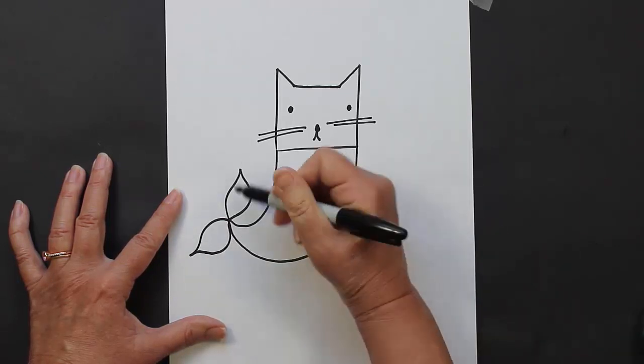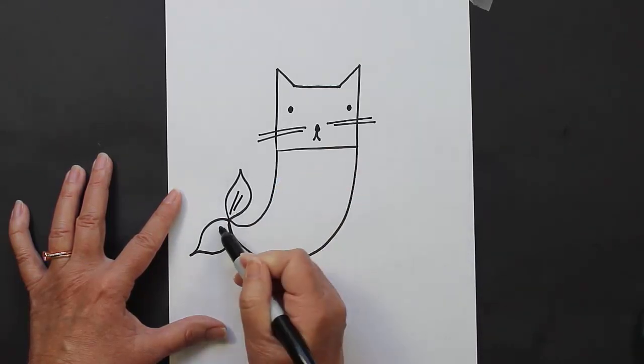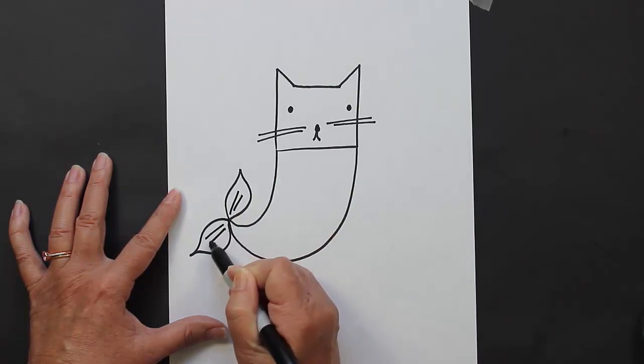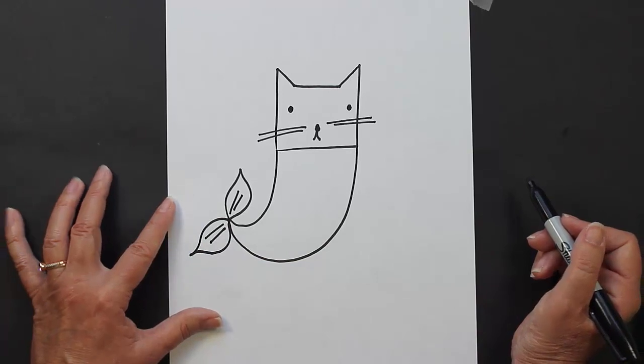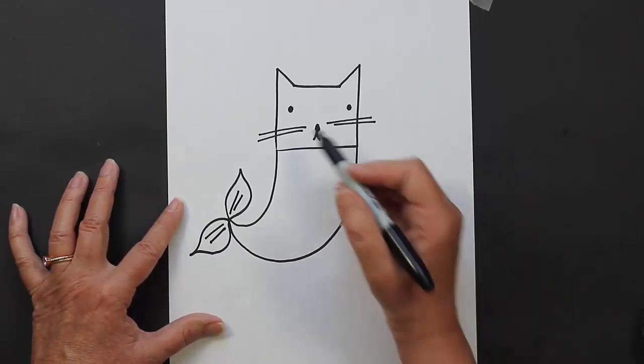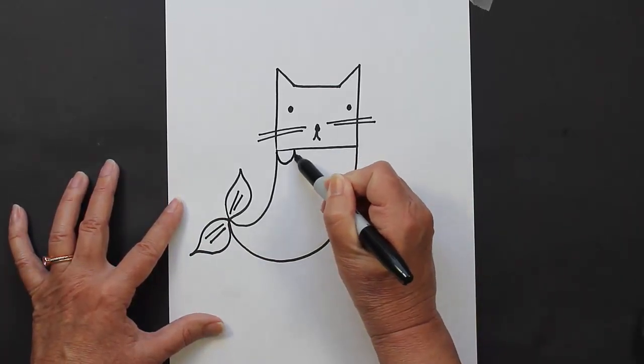Let's put a little bit of detail inside of each side of the tail - a couple of straight lines.